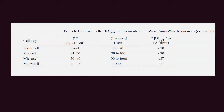For 5G output power requirements, cells are divided into femtocell, picocell, microcell, and macrocell. Femtocell serves 1–20 users with output power 0–24 dBm; picocell serves 20–100 users at 24–30 dBm; microcell serves 100–1000 users at 30–40 dBm; and macrocell serves over 1000 users at 40–47 dBm. So from a power amplifier design perspective, the range spans from less than 20 dBm up to greater than 27 dBm.